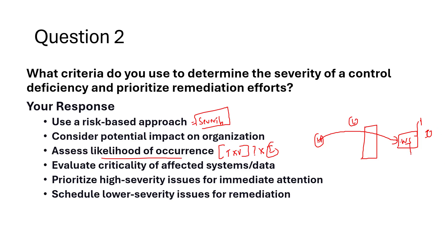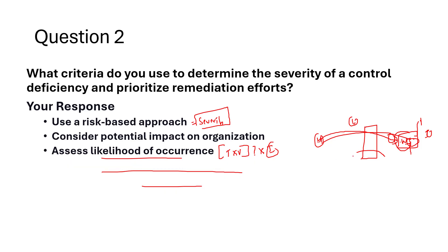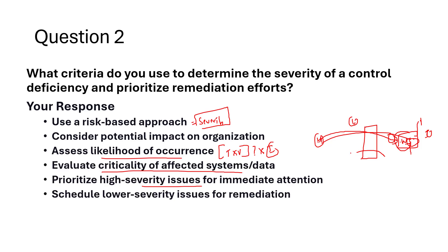Similarly, a web server holding financial data exposed on the internet was my top priority to patch, while other vulnerabilities like physical system access were lower priority. I prioritize high-severity issues for immediate attention and schedule low-severity issues for remediation within a reasonable timeframe. This approach ensures resources are focused on mitigating the most significant risks first.